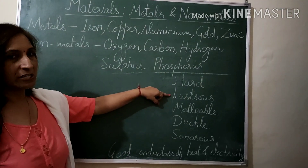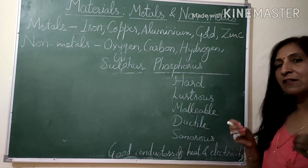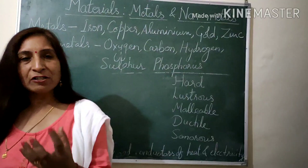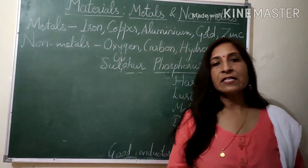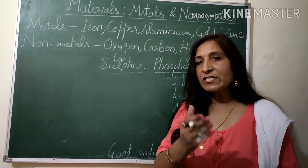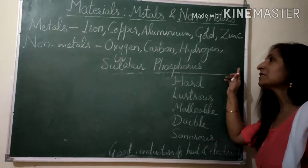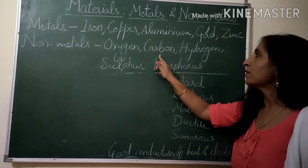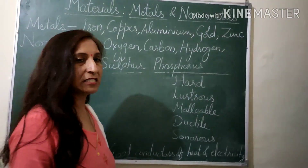Next, metals are lustrous, meaning they are shiny substances. All metals appear shiny. If a piece of metal looks dull, it is because of its reaction with atmospheric gases; otherwise a fresh piece of metal is always shiny. You must have seen fresh iron nails, which are so shiny. Non-metals are not lustrous — a piece of carbon is dull in appearance.